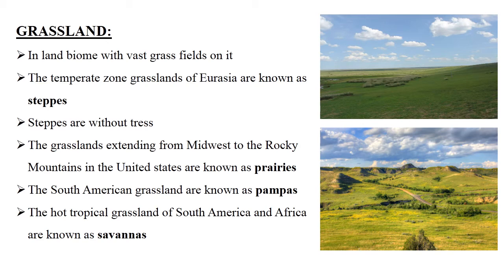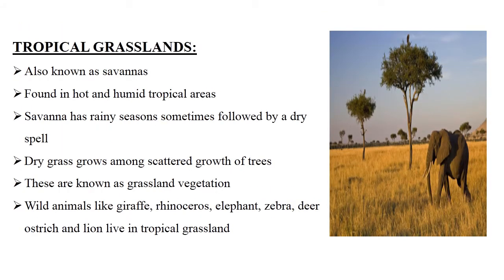The South American grasslands are known as pampas. The hot tropical grasslands of Africa and South America are known as savannahs. The most common animals of different grasslands are the prairie dog and mule deer found in North America, giraffe and zebra found in Africa, and lion found in both Africa and Asia. Tropical grassland is also known as savannah.